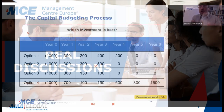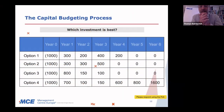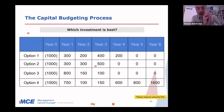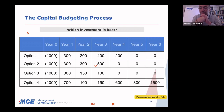Apparently the majority of participants are saying option four is the best, but some are undecided. Why would somebody who chose option four say it's the best? Can somebody speak up briefly and tell me why you think option four is best? Just turn on your microphone.